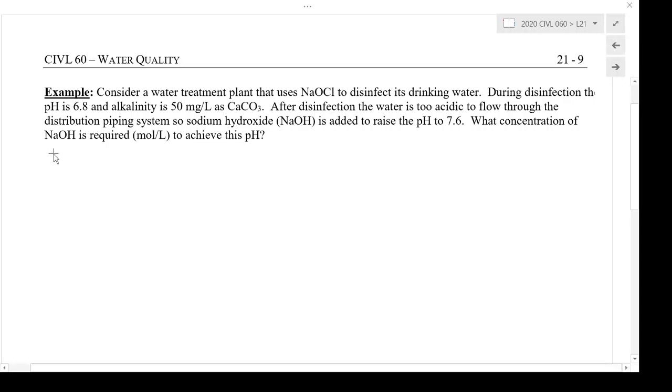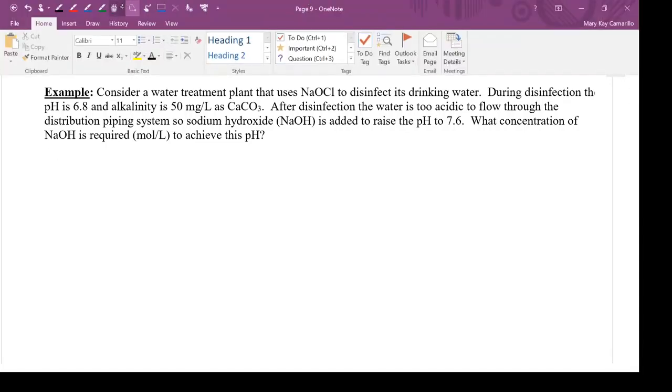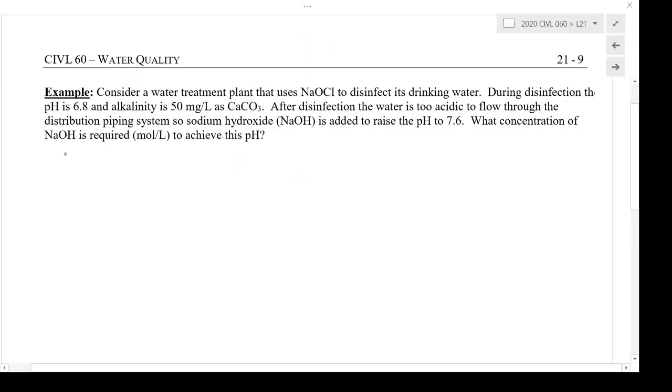To start with, I'm going to convert the units of alkalinity. So I'm given 50 milligrams per liter as CaCO3 and I'm going to divide that by 50,000 which is the equivalent weight of calcium carbonate. So it's 50,000 milligrams per equivalent and that gives me 0.001 equivalents per liter.